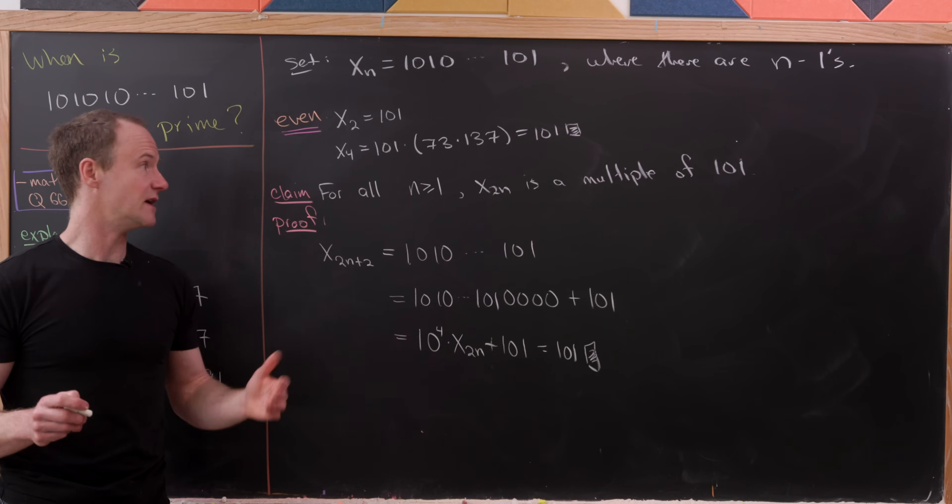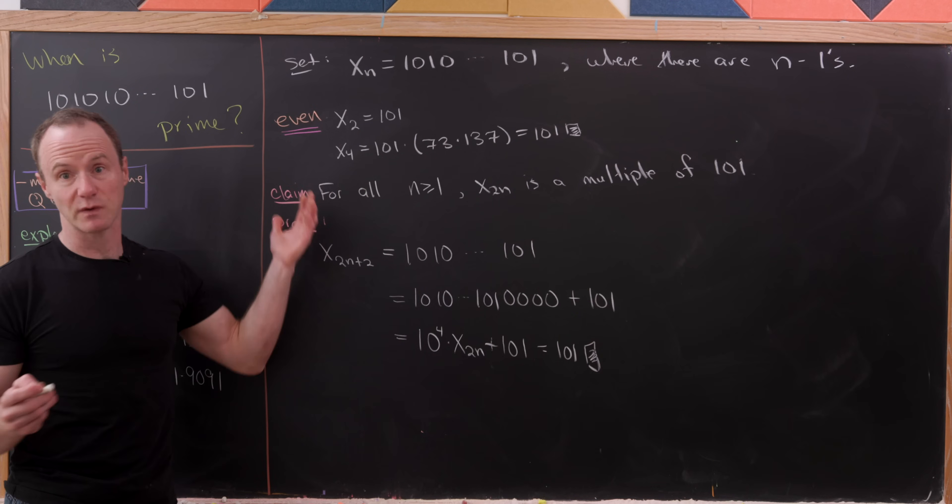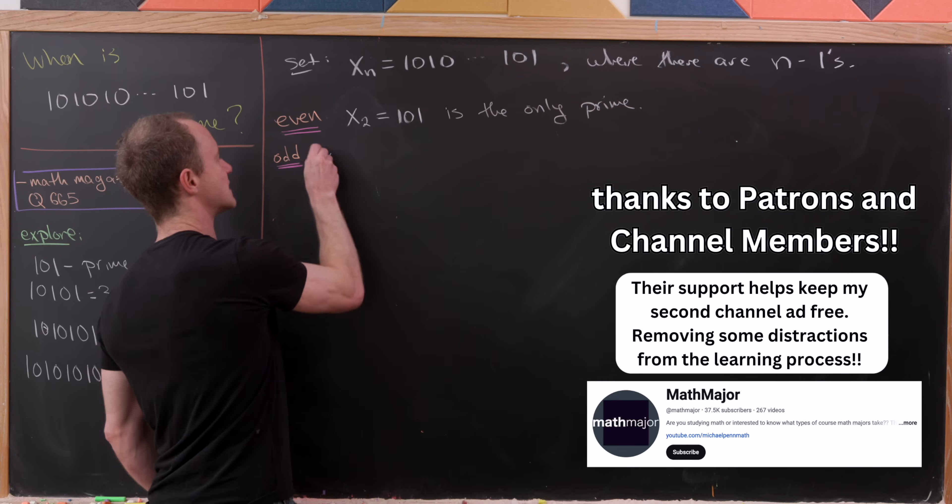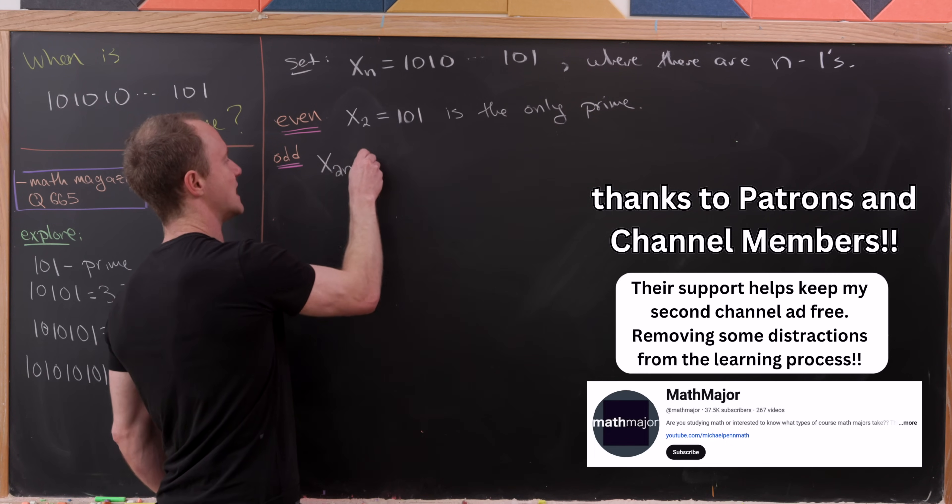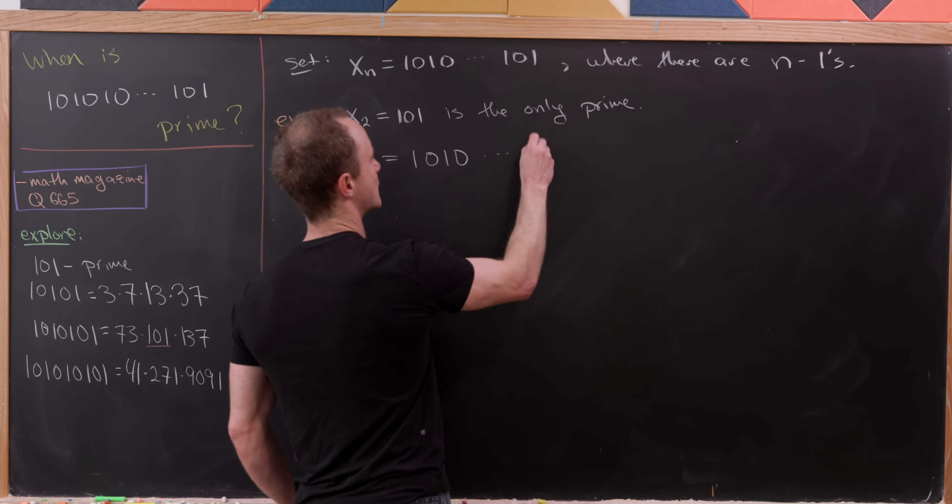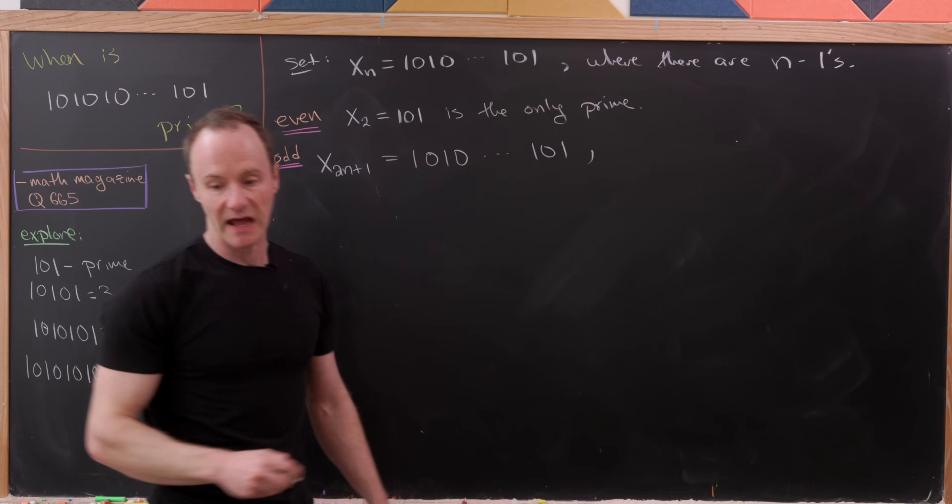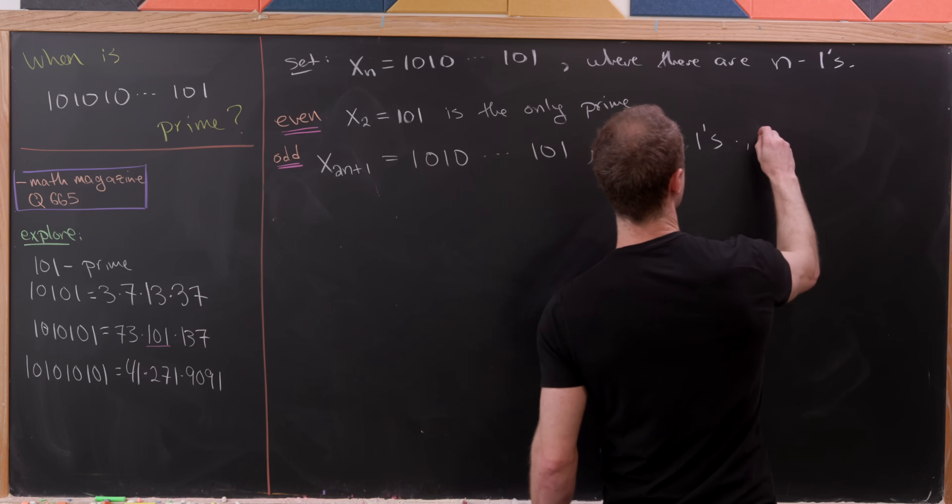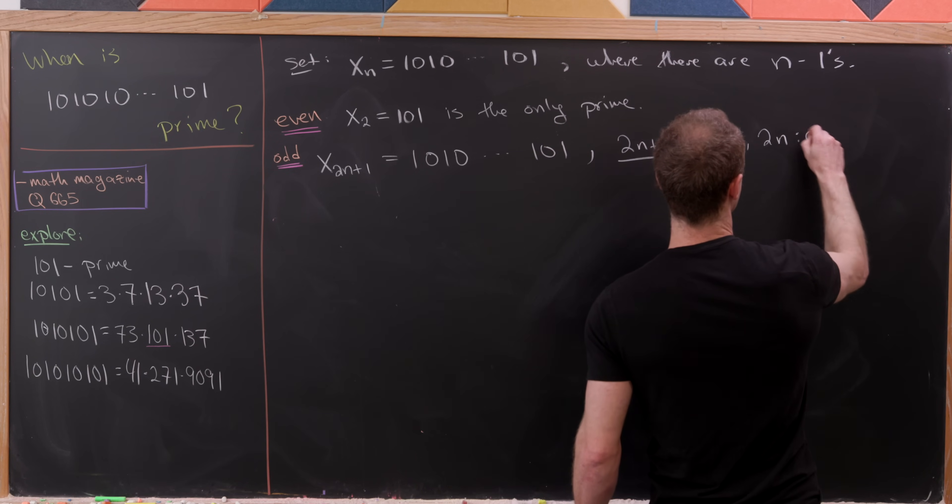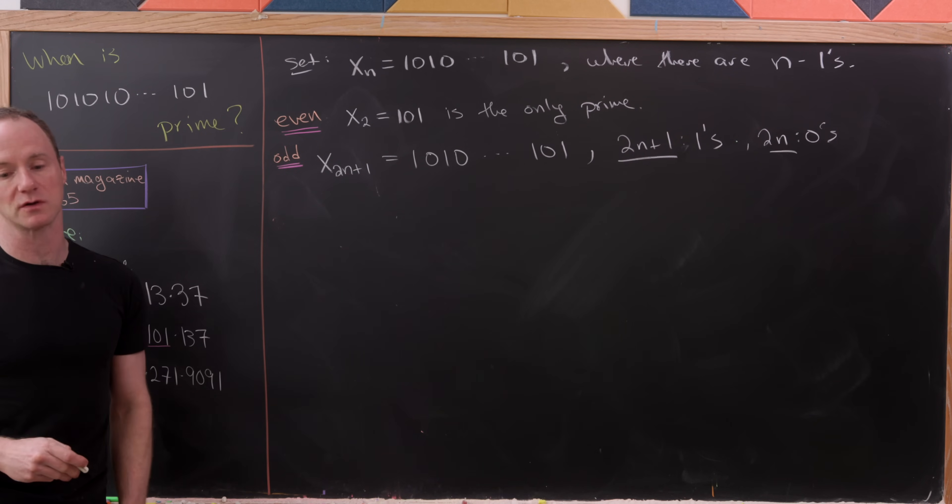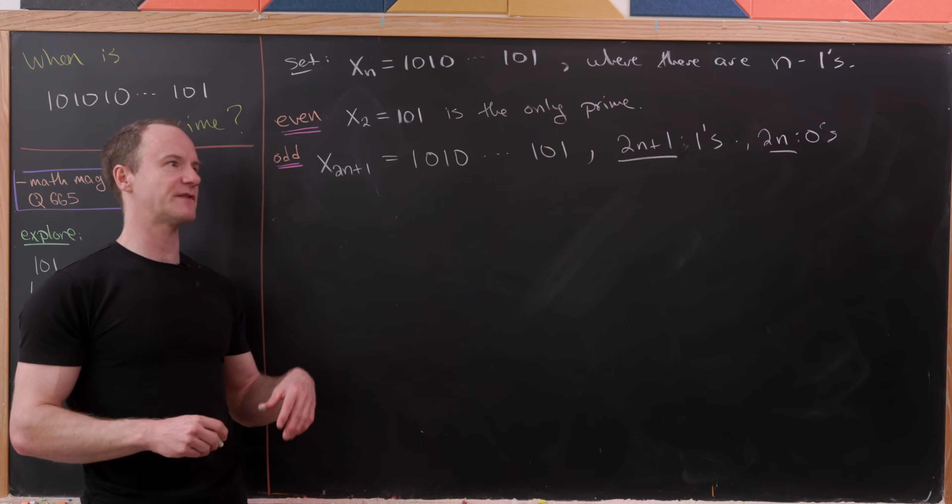So now what about the odd indexed x's? Well, let's look at those. So moving on to the odd indexed terms, that means we're looking at things of the form x sub 2n plus 1. So in other words, this is going to be 1, 0, 1, 0, and so forth, 101. And here there are going to be 2n plus 1 ones. And then because there's a 0 between every 1, there will be exactly 2n zeros.